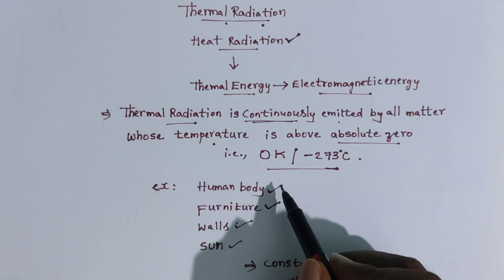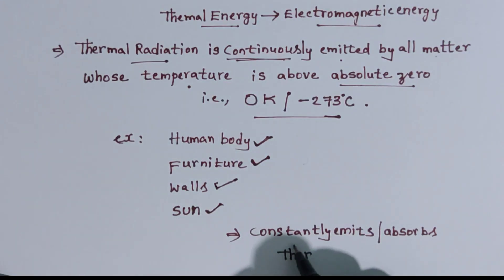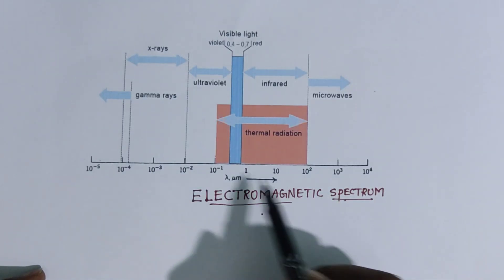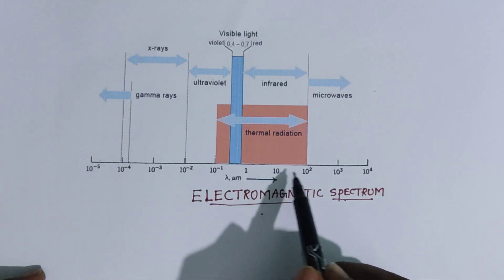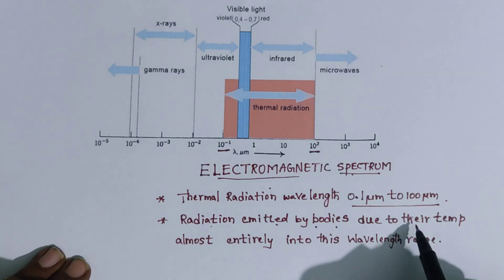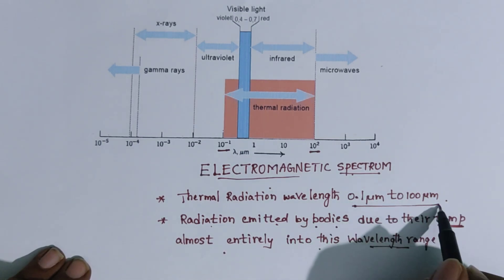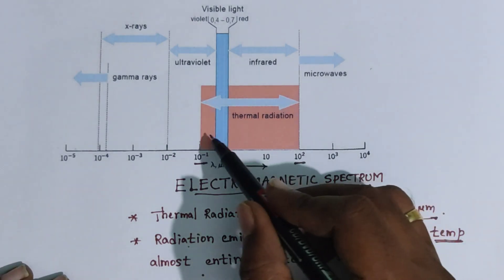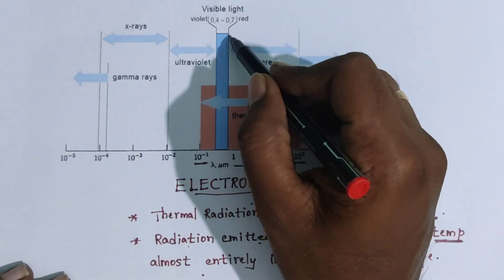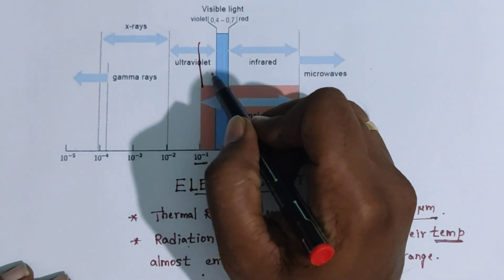Everything around us — such as the human body, furniture, walls, and the sun — constantly emits or absorbs thermal radiation. Observe the diagram of the electromagnetic spectrum. Thermal radiation extends from 0.1 micrometer to 100 micrometers. Radiation emitted by bodies due to their temperature falls almost entirely within this wavelength range. The portion of thermal radiation on the electromagnetic spectrum consists of visible light, ultraviolet light, and infrared radiation.